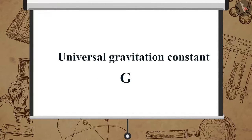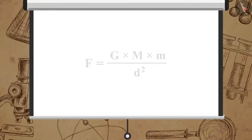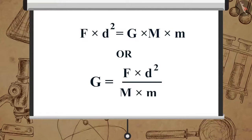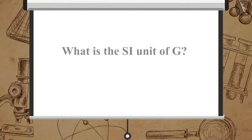Now let's see the mathematical formulae for universal gravitation constant G. From this equation we can get F multiplied by d square is equal to G multiplied by M multiplied by m or G is equal to F multiplied by d square upon M multiplied by m. Can you determine the SI unit of G from the previous equation?